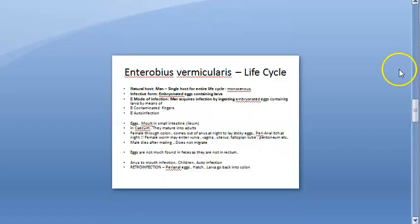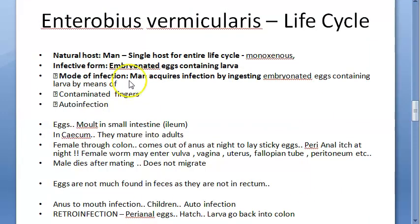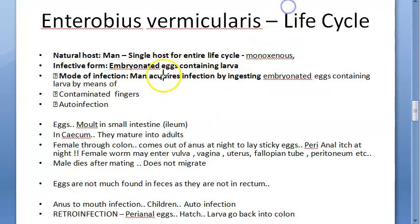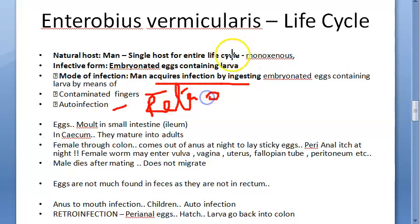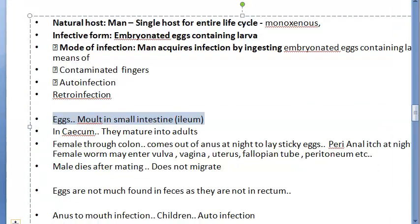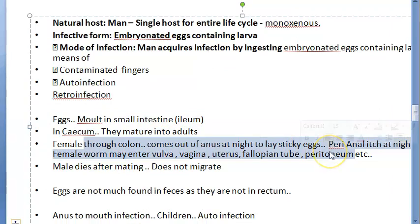Man is the only natural host for Enterobius vermicularis — this is called monoxenous. The infective form is the embryonated egg containing the larva. Mode of infection includes ingestion of embryonated eggs, auto-infection, and retro-infection. Eggs hatch in the small intestine, adults mature in the cecum, and the gravid female exits through the colon and anus at night to lay eggs in the perianal region.